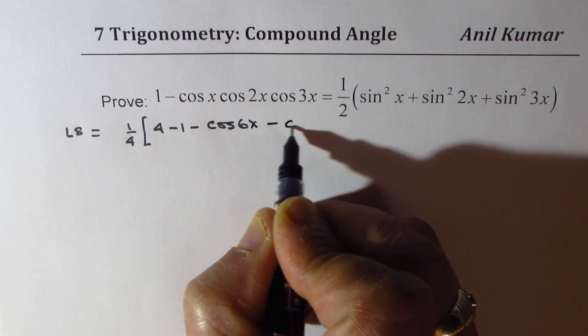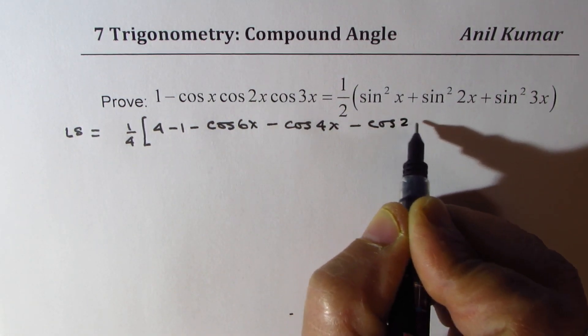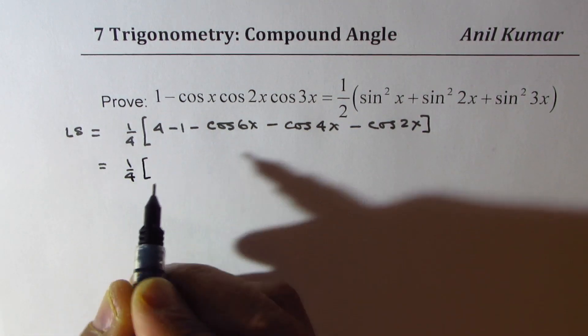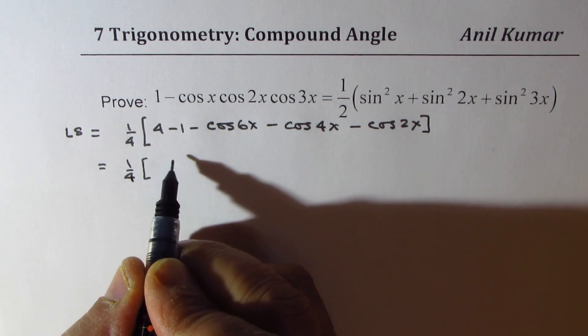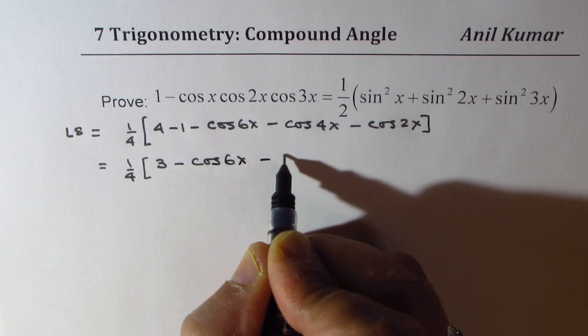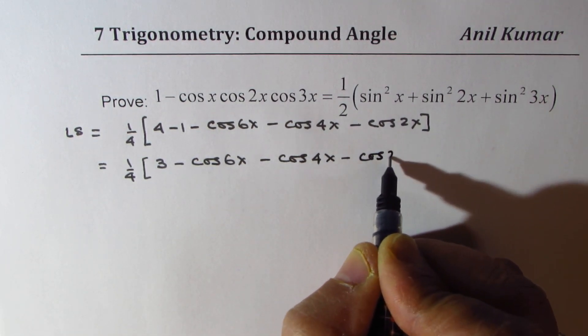Cos 6x minus cos 4x minus cos 2x. So, now we could write this as 4 minus 1 is 3. So, we get 3 minus cos 6x minus cos 4x minus cos 2x.